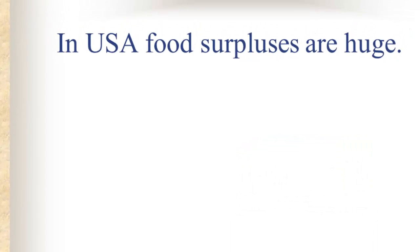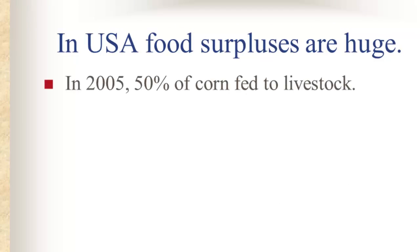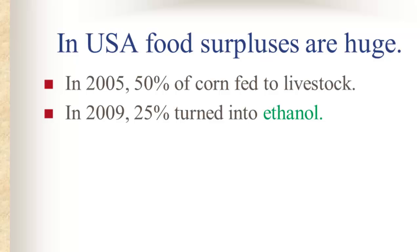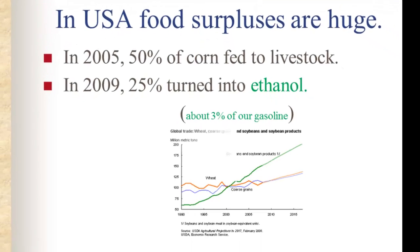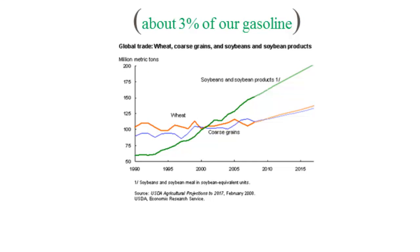American food surpluses are truly enormous. In 2005 we took half of that corn that we produced and fed it to livestock — so whenever you're eating hamburger or chicken, you're consuming corn indirectly. Then we started turning it into ethanol, and by 2009 we were turning 25 percent of our corn crop into ethanol, which amounted to about three percent of our gasoline.